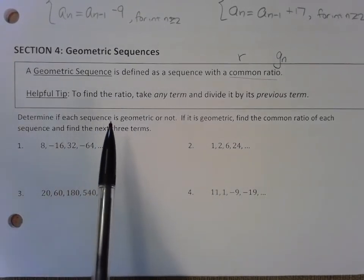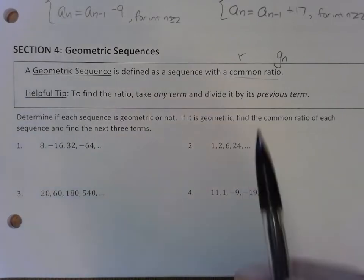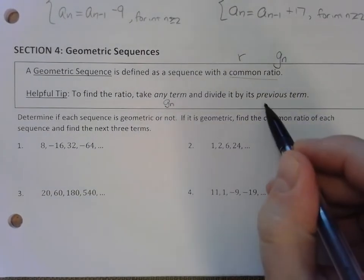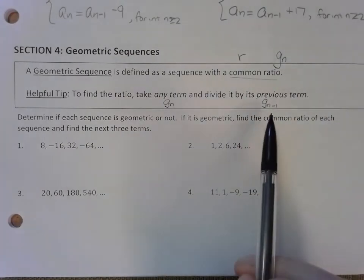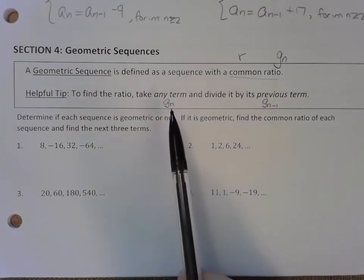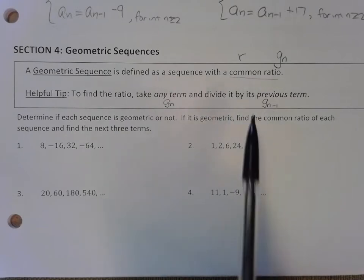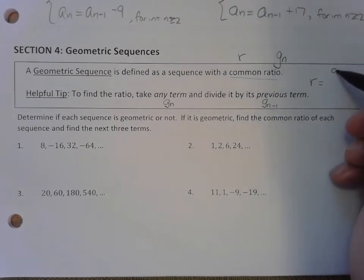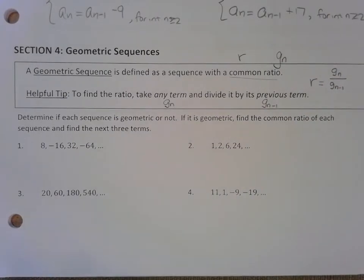Just a bit of helpful notation: you take any term, so any term is a general term, so g sub n, and divide it by the previous term. The previous term would be one less in terms of its location. So if this were a 5, this would be 5 minus 1 or 4. So our ratio equals any term divided by the term immediately before it, so r equals g sub n divided by g sub n minus 1. So you just divide those values.